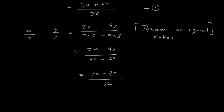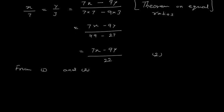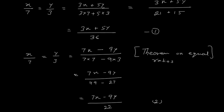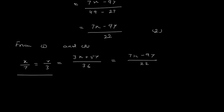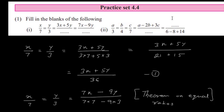So this equals (7x − 9y) / (49 − 27) = (7x − 9y) / 22. Consider this equation 2. From equations 1 and 2, we can say: x/7 = y/3 = (3x + 5y)/36 = (7x − 9y)/22. Done — question number 1.